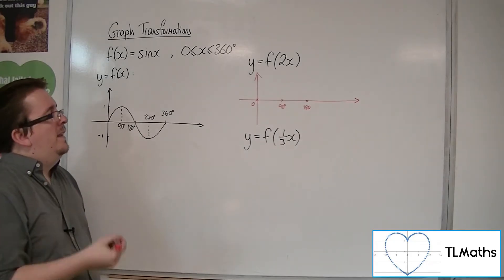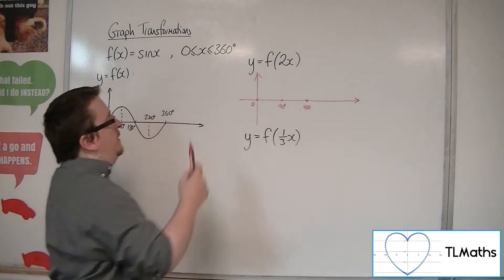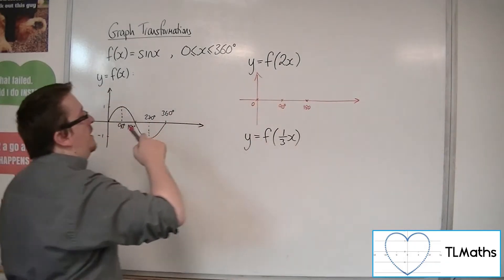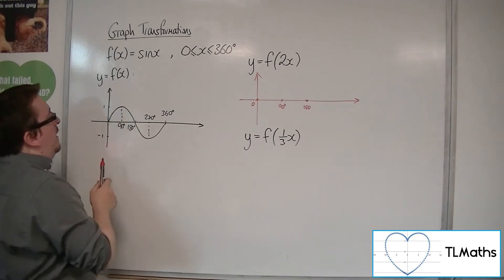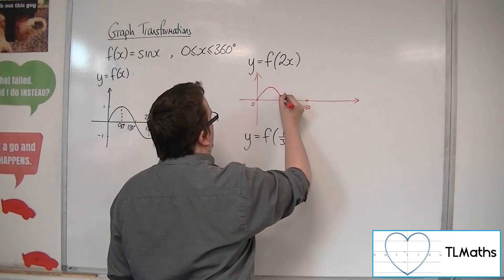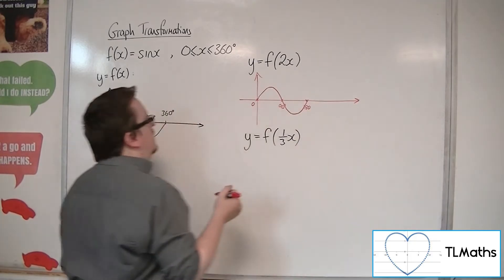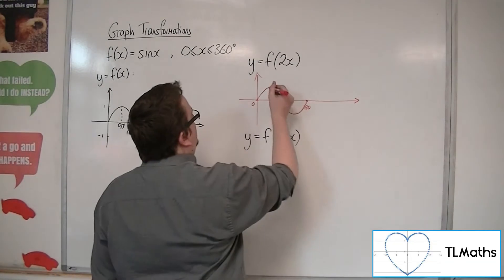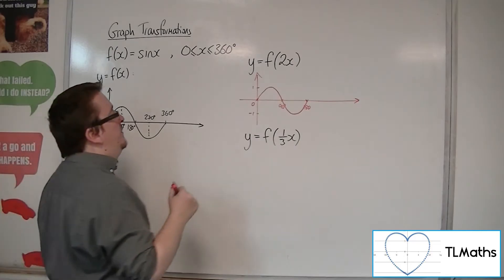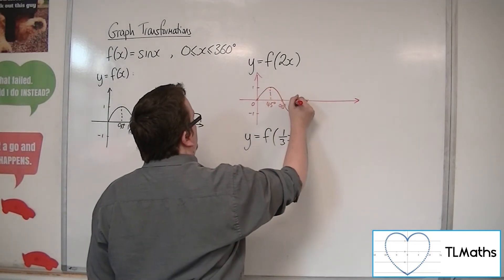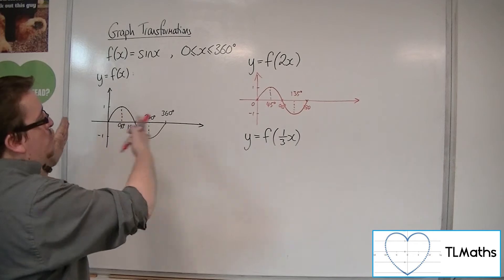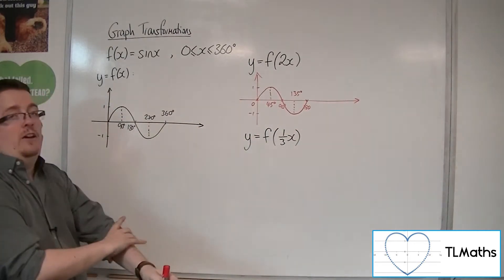So what does it look like? Let's try another point — let's try 45. When x is 45, we know that we've got f of 2 lots of 45, so f of 90. f of 90 is 1. So when we're at 45 degrees, we must be at 1. So the curve must be looking something like this. It's got the same shape, still going between minus 1 and 1 in its range, except that it has been squashed — all of those x-coordinates have been halved.